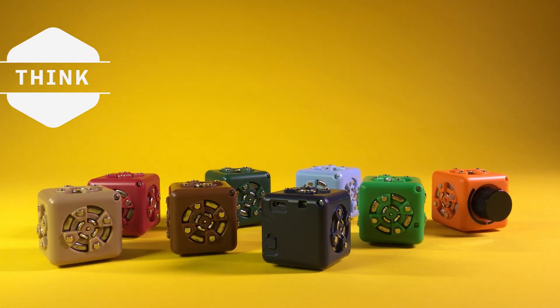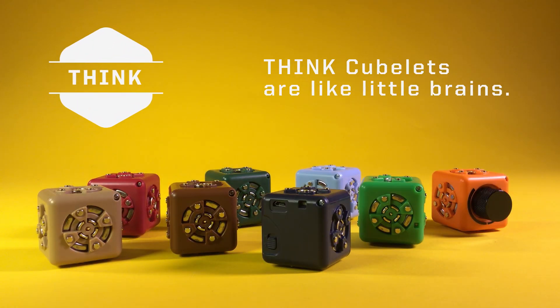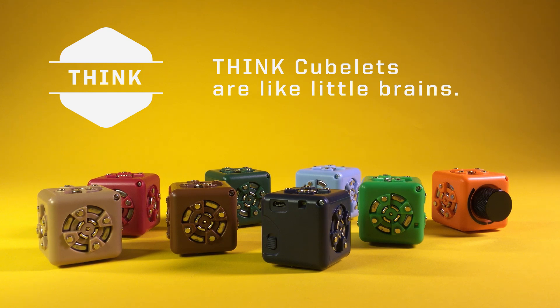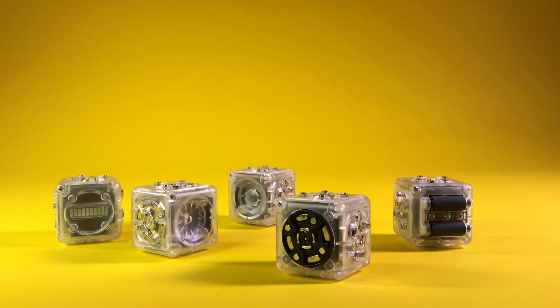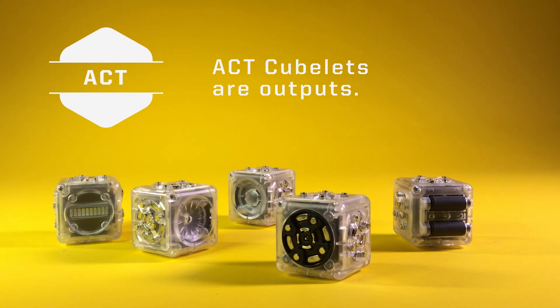The brightly colored ones are think cubelets and they act like little brains. They process information and can modify that information. Transparent cubelets are called act cubelets and they function as outputs. They do things like spin around, light up or make sounds.